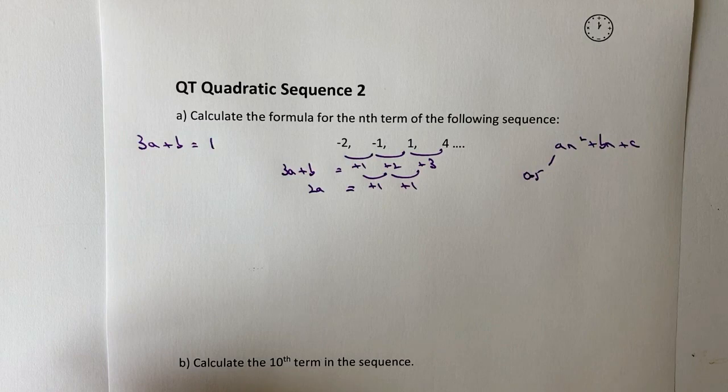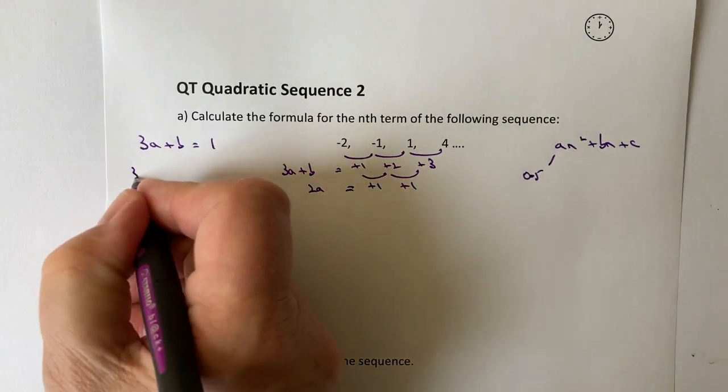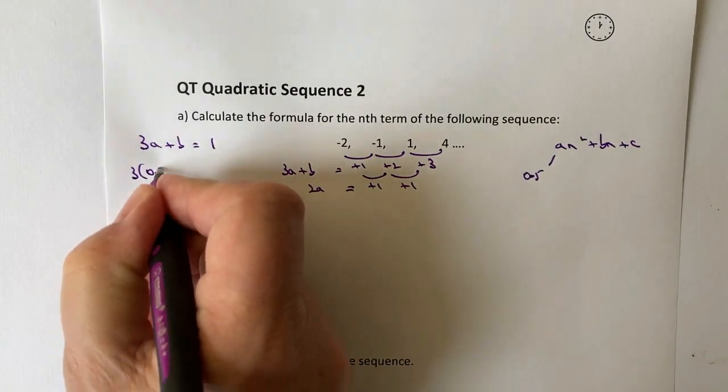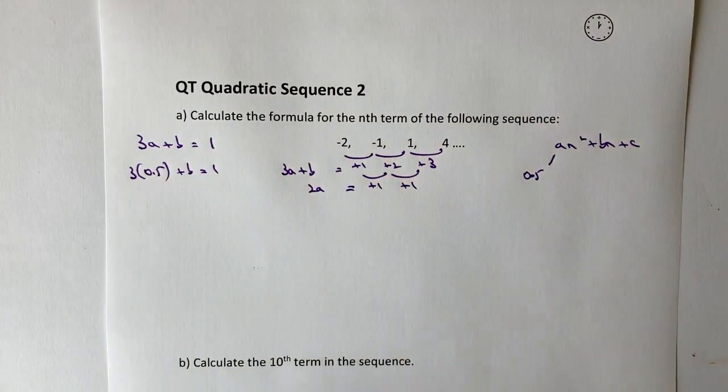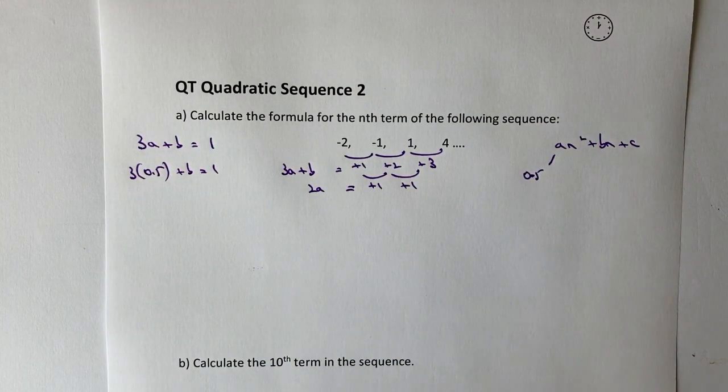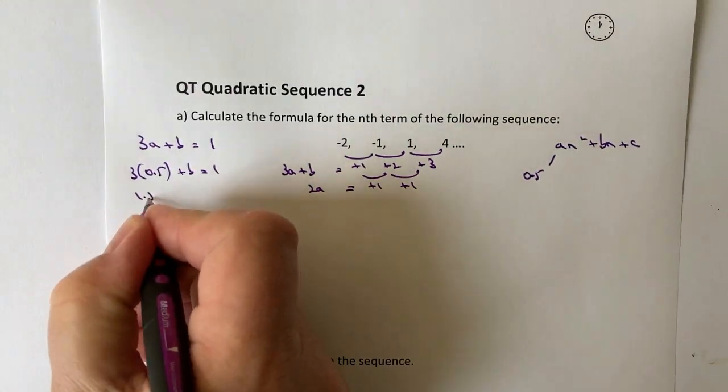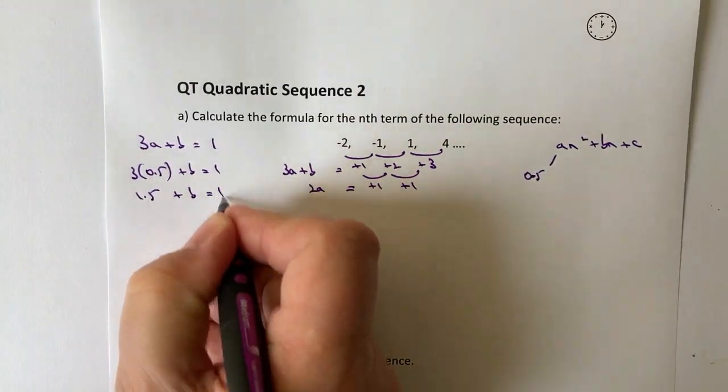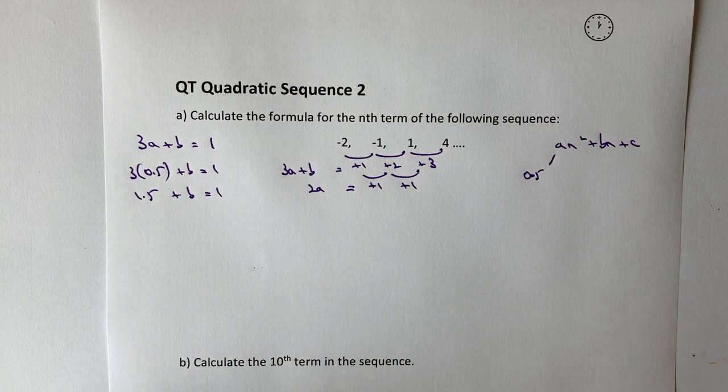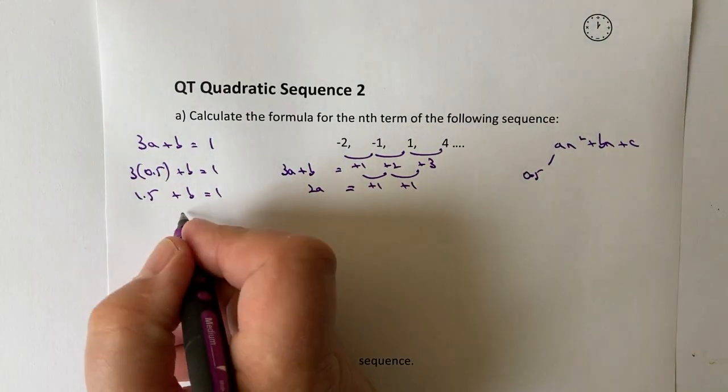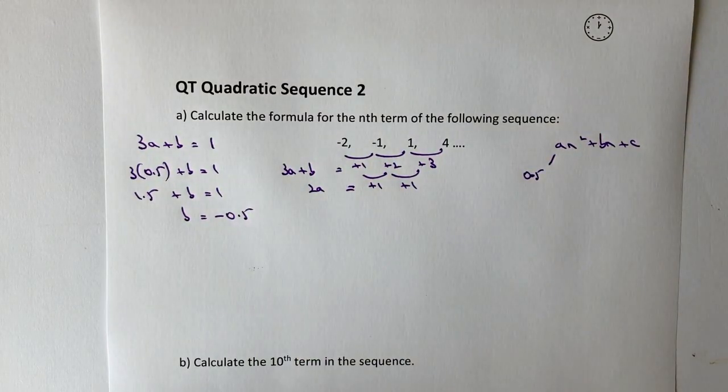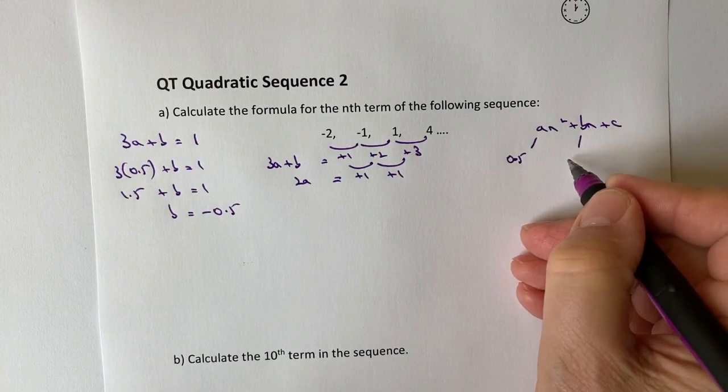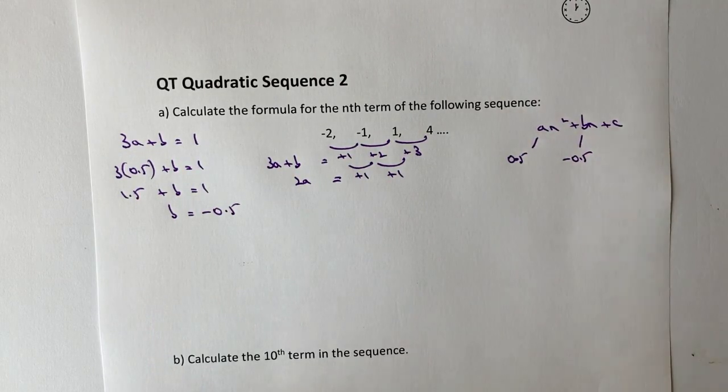My value of a as I mentioned before was a half. So I've got 3 times 0.5 plus b equals 1. Well, 3 times a half or 3 times 0.5 is going to give me 1.5 plus b equals 1. So if I minus 1.5 from both sides, I'm going to get that b equals -0.5, and that's my second value of b.